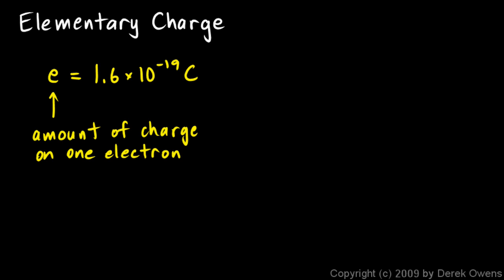Charge is said to be quantized. And that means you can't just pick any number for a charge. You can't just say, I want to have this much charge and pick any number. It has to be a multiple of e. Charge only comes in whole number multiples of e. And that's what it means to be quantized.